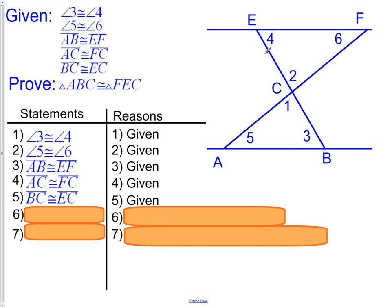Now let's go ahead and mark that information on our picture. Angle three is congruent to angle four. Angle five was congruent to angle six. Side AB was congruent to side EF, and side AC was congruent to side FC. Lastly, side BC is congruent to side EC.